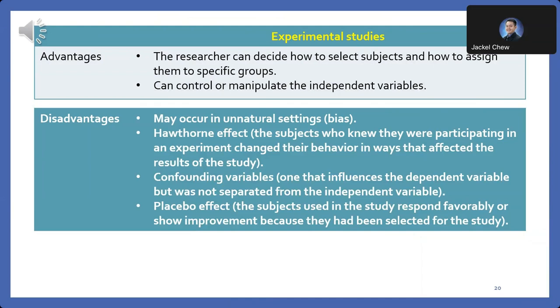Disadvantage 1: Experimental settings may not always reflect real-world conditions, potentially introducing bias into the study. Disadvantage 2: The Hawthorne effect may occur, where subjects change their behavior due to awareness of being studied, impacting the study's outcomes.